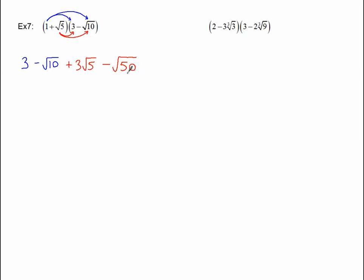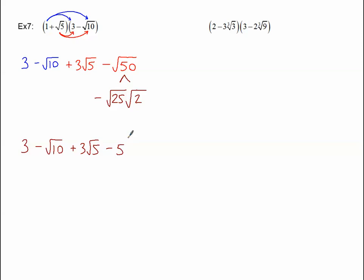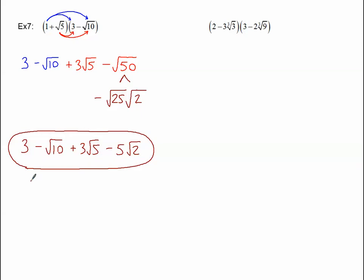So we FOILed this and got four terms. None of these terms are like terms because the 10, the 5, and the 50 are all different radicands — so they cannot combine, at least not yet. The square root of 50 should be able to simplify — I can see there's a 25 hiding in here. So I'll split this up, keeping the negative sign. The square root of 50 can be rewritten as the square root of 25 times the square root of 2. Bringing down the 3, the negative square root of 10, and the 3 square root of 5 — the square root of 25 is 5, and square root of 2 remains. We still don't have like terms, none of the radicands are the same, so this is our final answer.